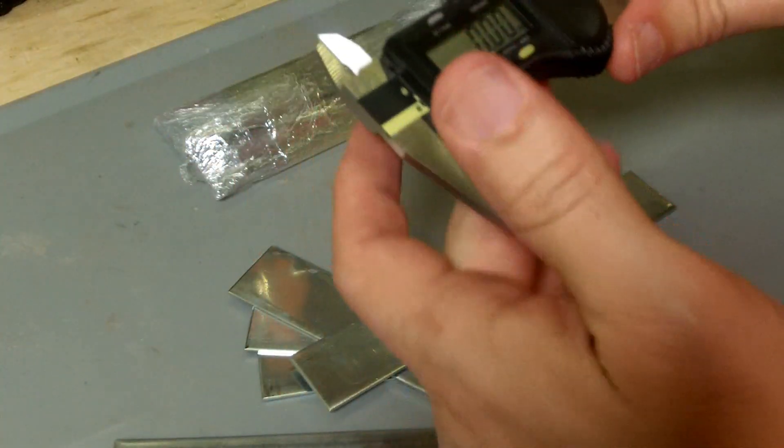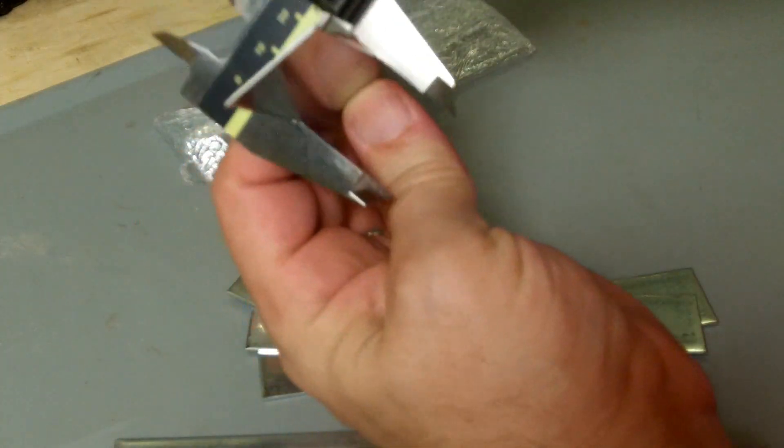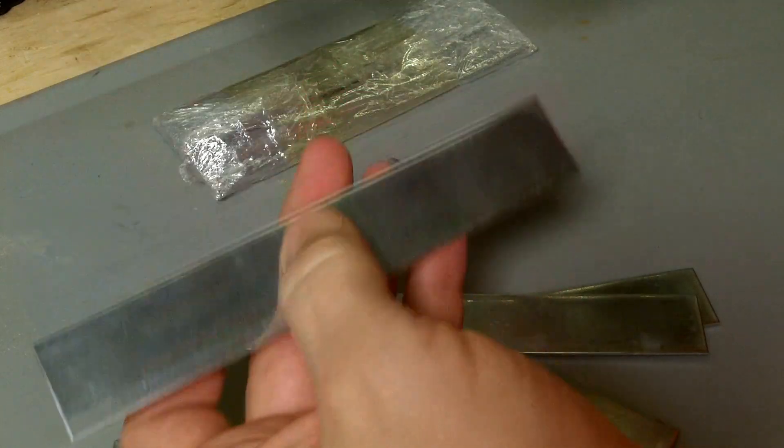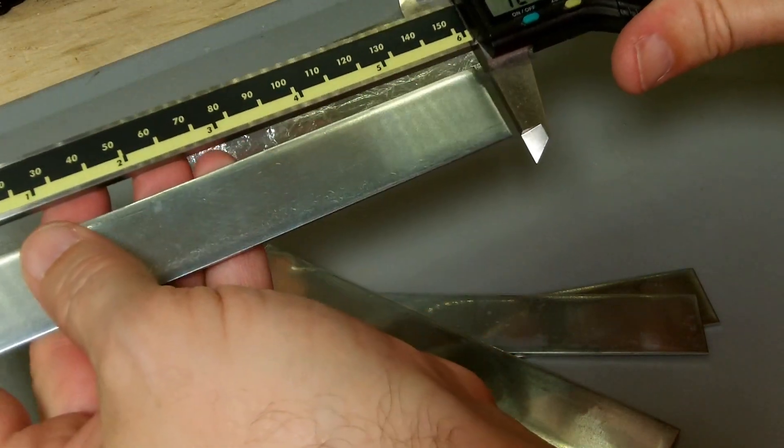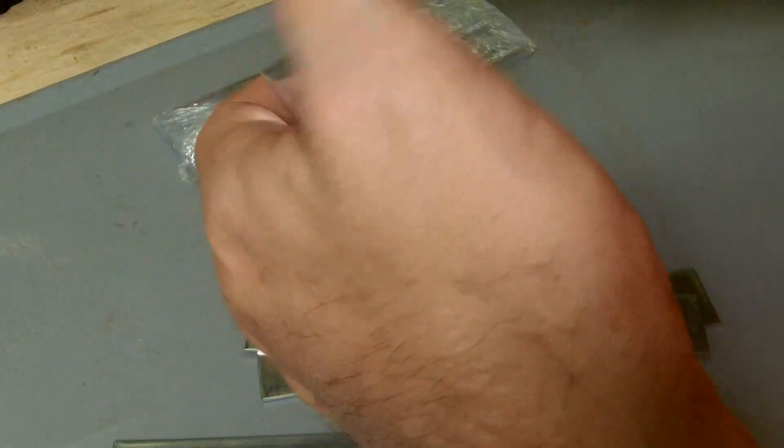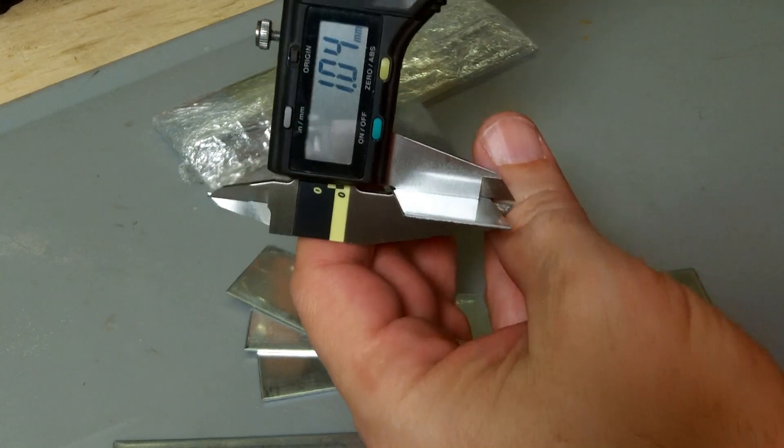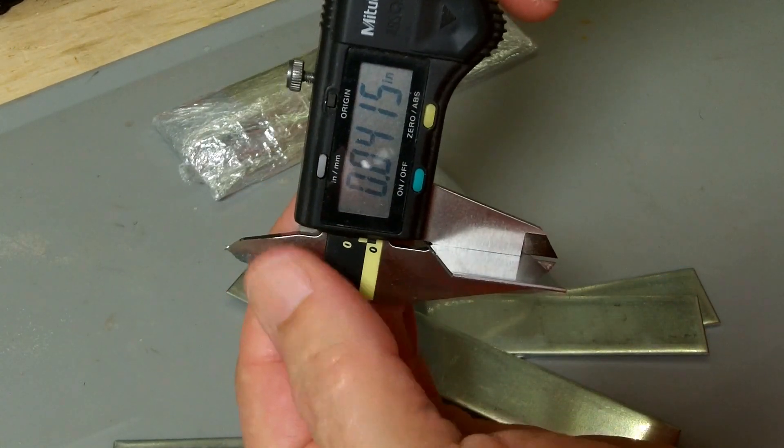Dimension-wise we're looking at 24.4, so basically one inch in length that way and then six inches here. Thickness-wise we're right at one millimeter for thickness. That's 0.04 inches.